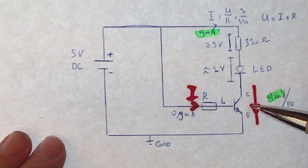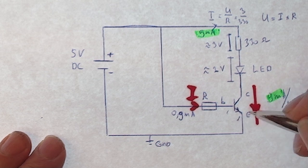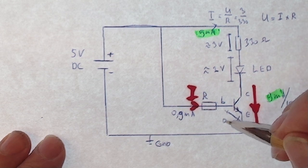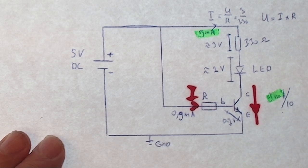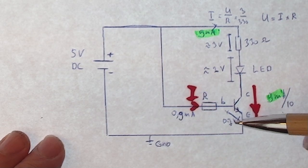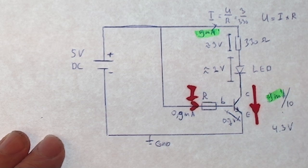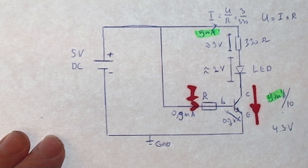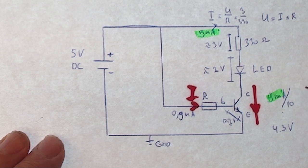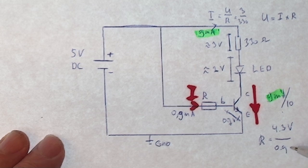Now we can usually say that the voltage drop on base emitter is 0.7 volts. So 5 volts minus this 0.7 is 4.3 volts over our resistor. So if we want to determine the resistance we can do 4.3 divided by 0.9 milliamps.